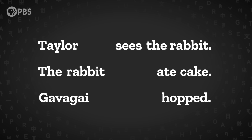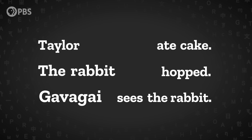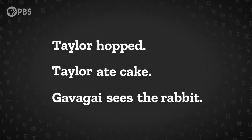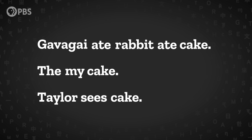First, we notice that we can split each sentence into two pieces and mix and match the front half and the back half. We have 'Taylor,' 'the rabbit,' and 'Gavagai' on one side, and 'sees the rabbit,' 'ate cake,' and 'hopped' on the other. This structure predicts that 'Taylor hopped,' 'Taylor ate cake,' and 'Gavagai sees the rabbit' should be okay sentences, even though they're not on our original list. Based on my linguistic intuitions as an English speaker, that's a good prediction and is part of our grammar. We've established that sentences contain two parts. But it also matters what those two parts are.